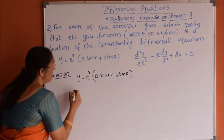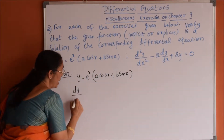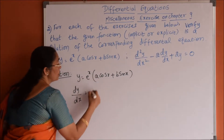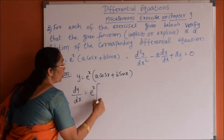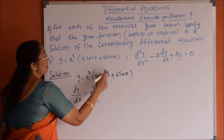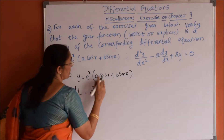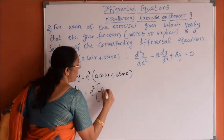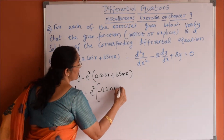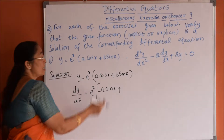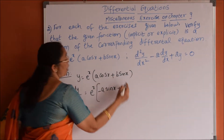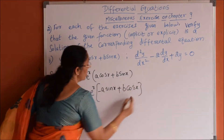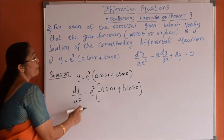First differentiation: dy by dx is equals to e power x into, by product rule, differentiation of a cos x is minus a sin x, plus differentiation of b sin x is b cos x. So this is dy by dx.